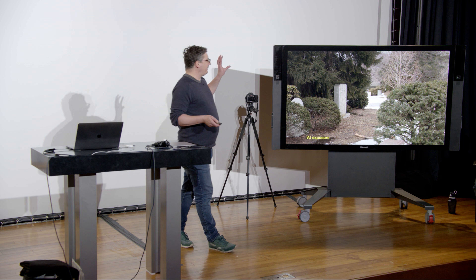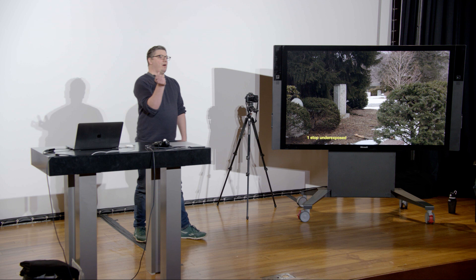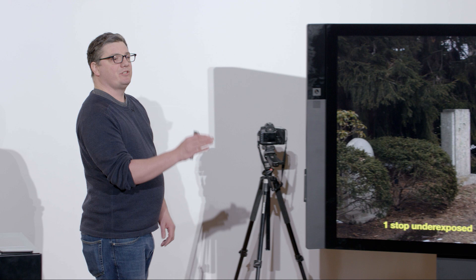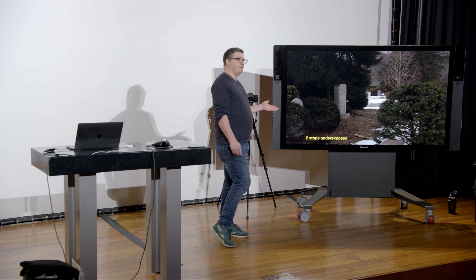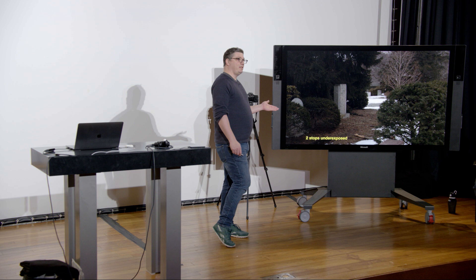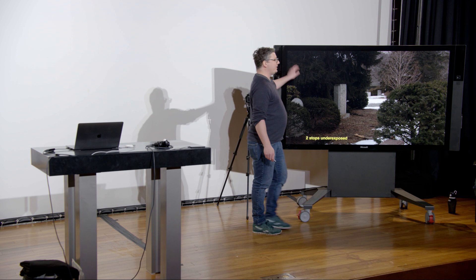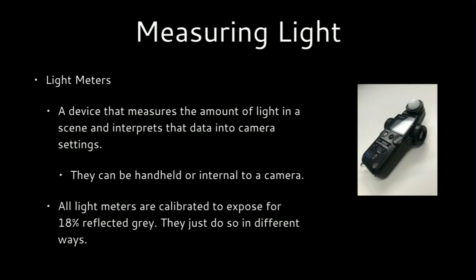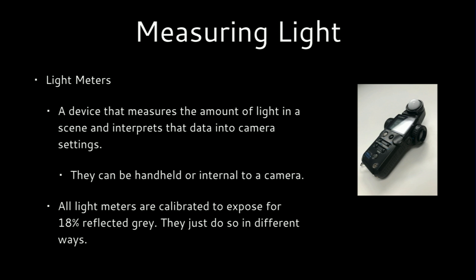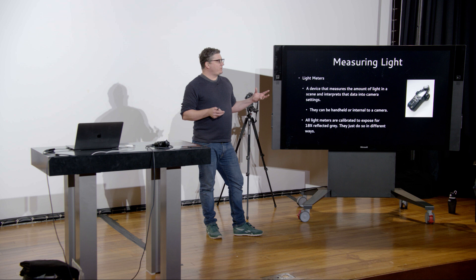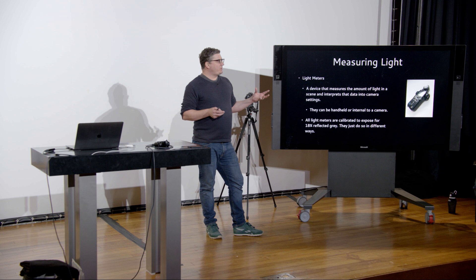Going the other direction from that same base exposure, reducing light entering the camera by half — one stop — all the tonalities get pushed down into the shadow areas. There's more detail in the bright snow, but it becomes a shade of gray. At two stops under, four times less light reaching the sensor, you see beautiful detail in highlights but everything else turns into muddy, crushed shadow. Keep going and the image becomes almost unreadable. These tools let us increase and decrease light in doubling or halving units.